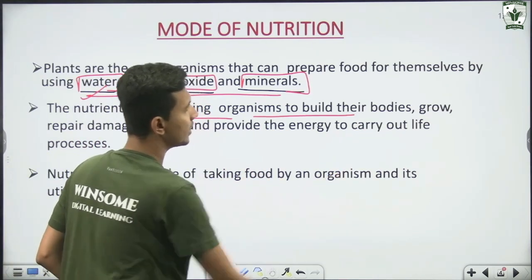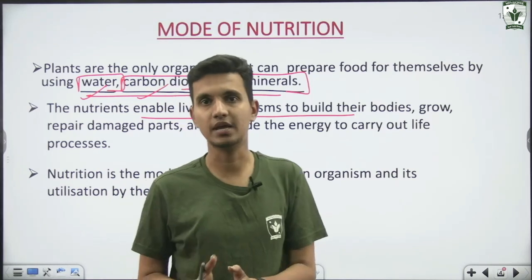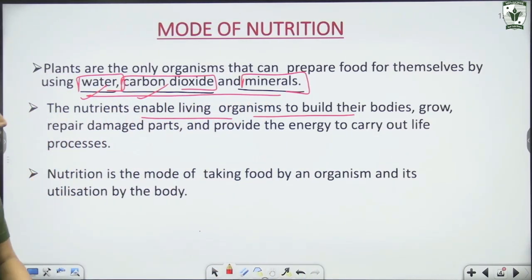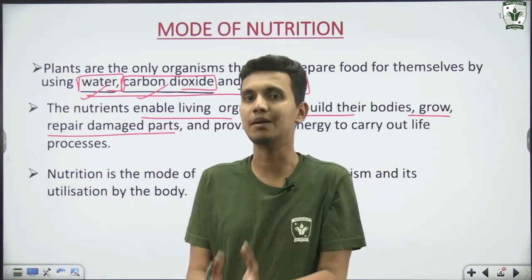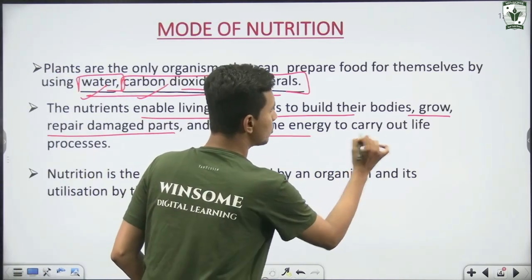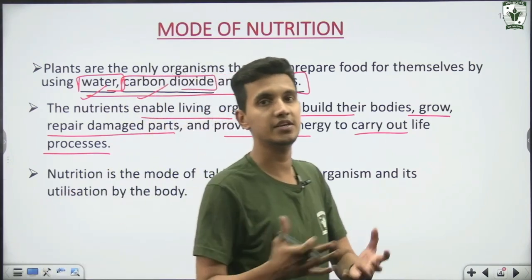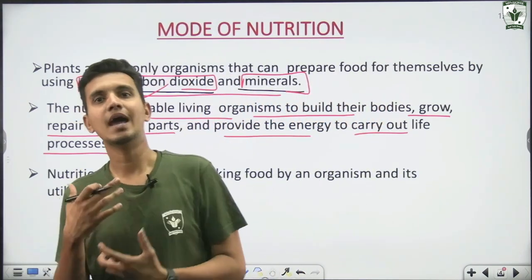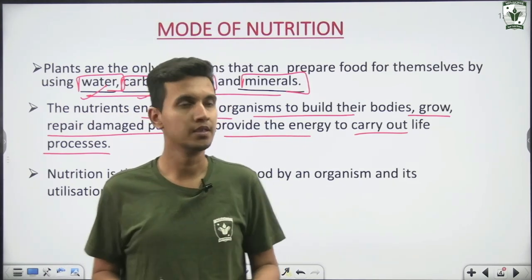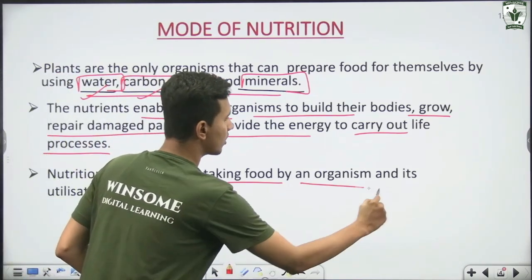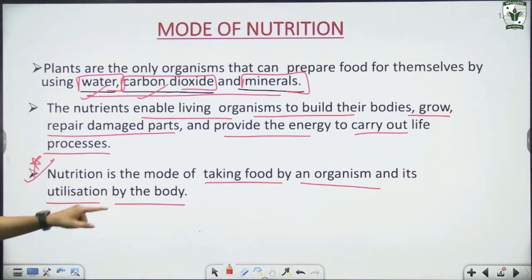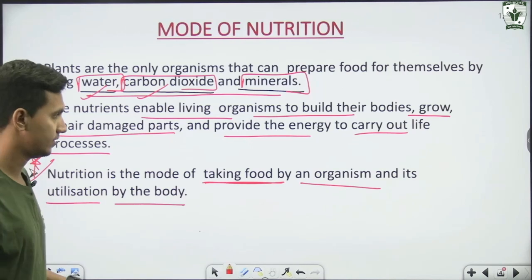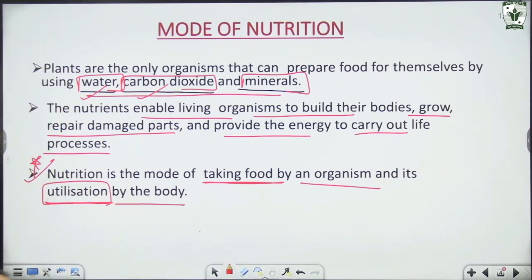Nutrients enable living organisms to build their bodies, repair damaged parts, and provide the energy to carry out life processes. Whatever we do, we need energy. Nutrition is a mode of taking food by an organism and its utilization by the body. Nutrition is the process where an organism takes food and uses it — utilization means it uses it for energy. We call this the nutrition process.